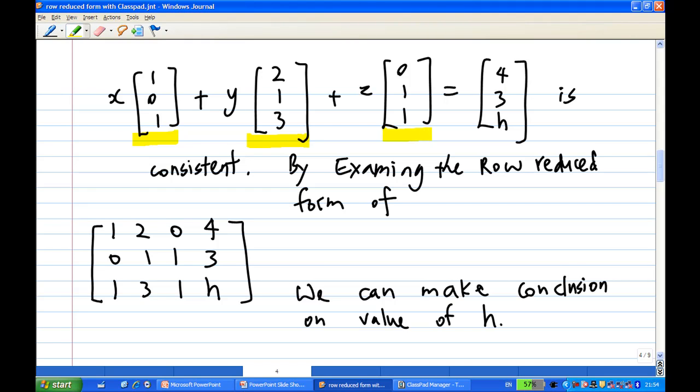That means that this equation must be consistent, that is, the equation has a solution for x, y, and z. You can do this by performing row operation by looking at the row reduced form of [1,0,1], [2,1,3], [0,1,1], and [4,3,H]. And then you can make conclusion on value of H so that the system equation is consistent.